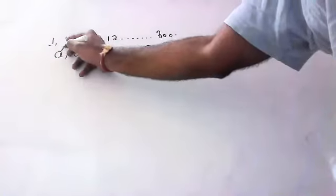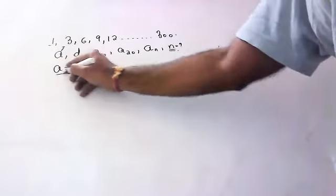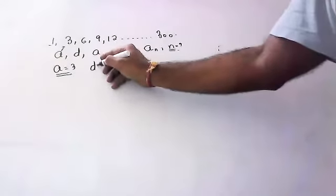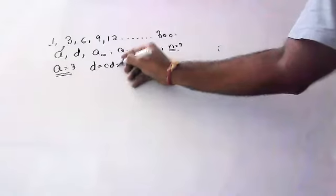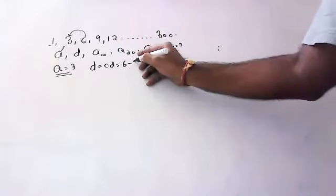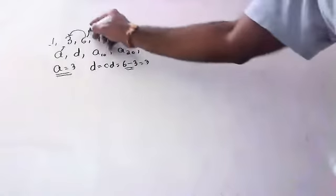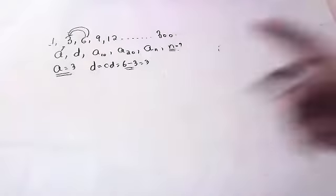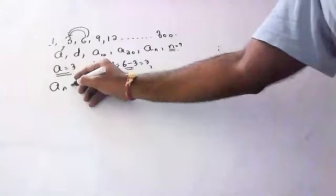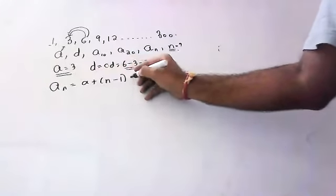Your first term a is 3. a always means the first term — that is 3, there is no doubt. d means common difference. Common difference is always second minus first: 6 minus 3, that is 3. We should always do second minus first, not first minus second. And we know the formula: aₙ = a + (n−1) × d.